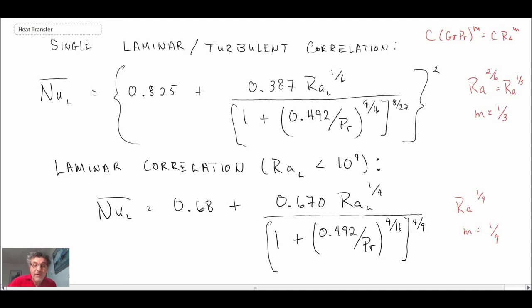Those are expressions that you can use for isothermal vertical flat plates, and it also works for a cylinder provided that the curvature is not that strong and we saw a relationship that enabled us to determine that. In the next segment, we'll move on to not isothermal but constant heat flux relationships for the vertical flat plate.